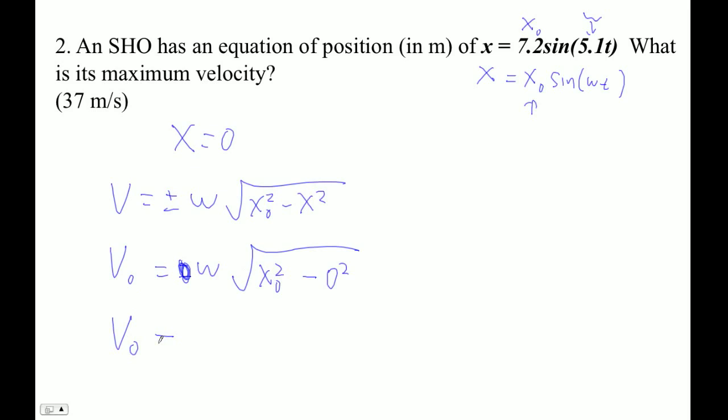So this should be in the data packet in my opinion, but it's not. So there's the derivation. So we can just take our omega, which is 5.1 radians per second, and multiply by our amplitude, which is 7.2 meters, apparently.